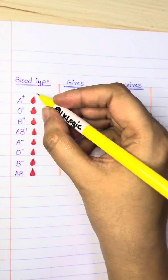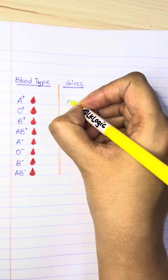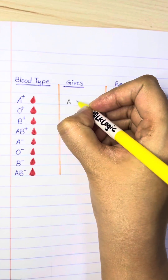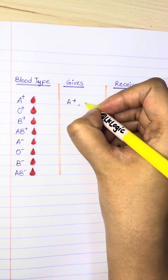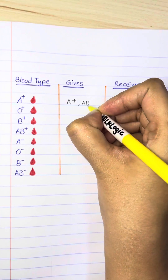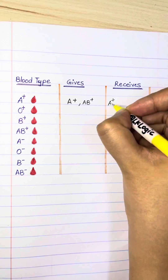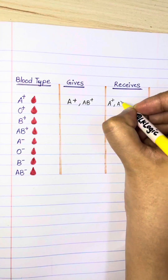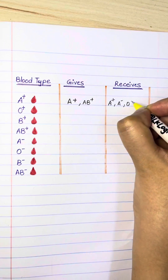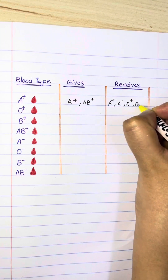Blood type A positive can donate blood to A positive and AB positive, and can receive from A positive, A negative, O positive, and O negative.